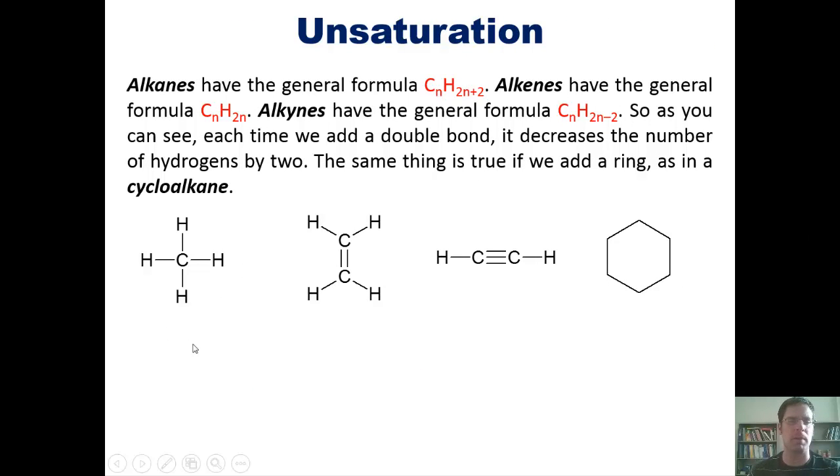Now, alkanes have the general formula CnH2n+2. Now, if you doubt me, you can go ahead and put in 1 right there for n, because there's only one carbon right here, and see if the number for H actually comes out to be 4, the formula of this molecule. If you do the same thing for any alkane that doesn't have any rings in it, at least, that formula works. Now, alkenes have the general formula of CnH2n. Alkynes have the general formula CnH2n-2.